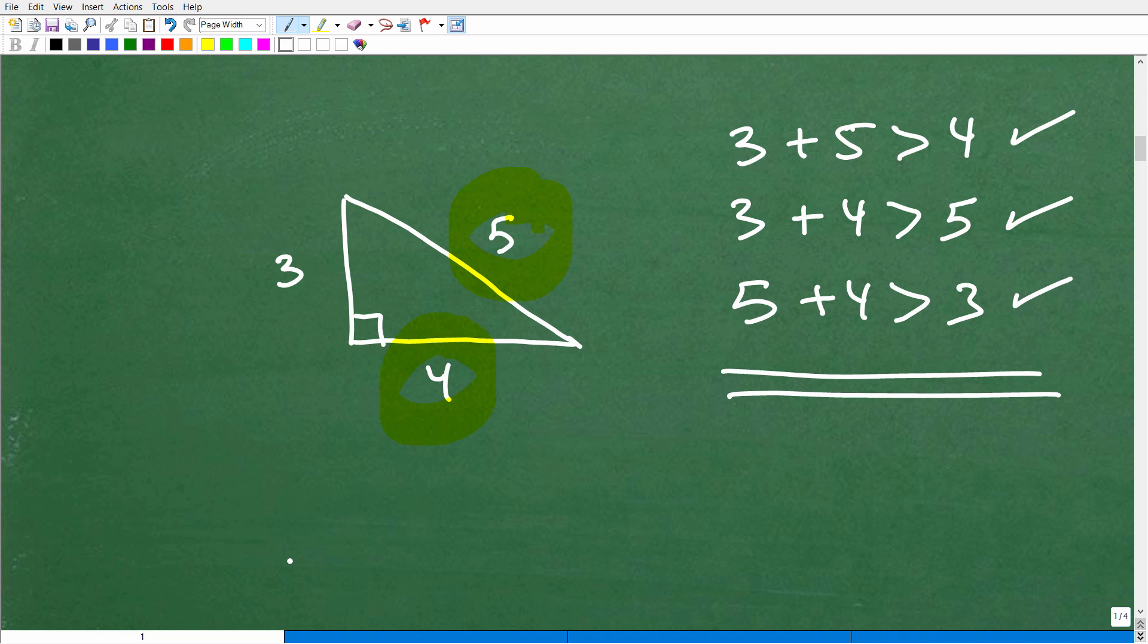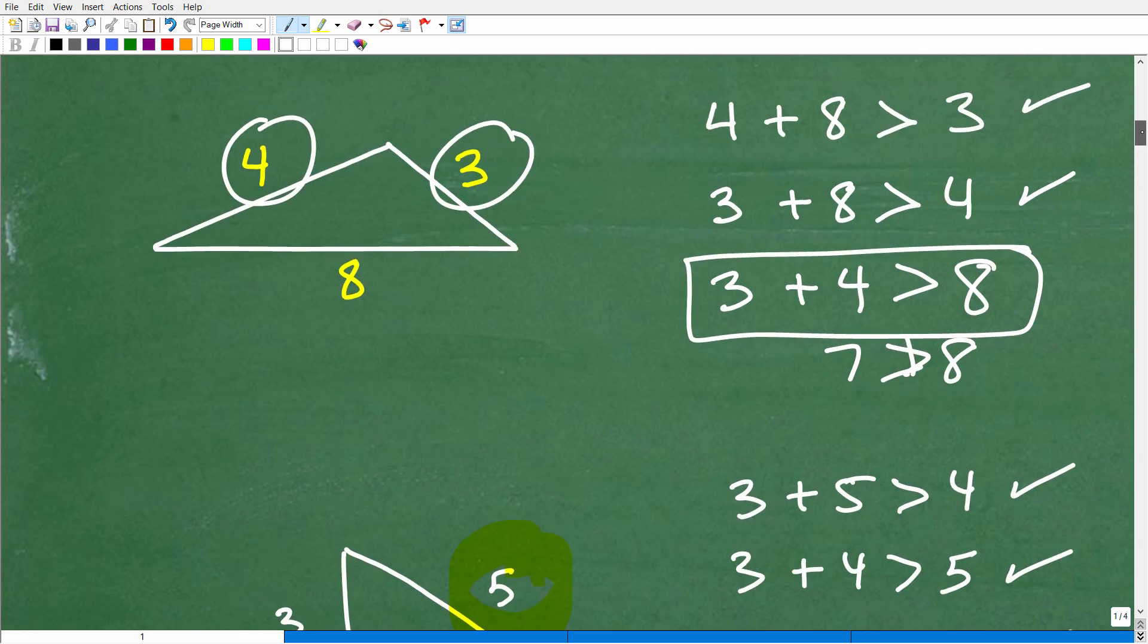Because, again, if you had like 100 over here and I gave you these two other lengths, 2 and 3, there's no way I could construct a triangle. I would have some figure like this, okay? So just because you have three sides, it doesn't mean that you can form a perfect closed triangle.